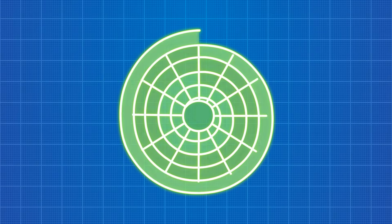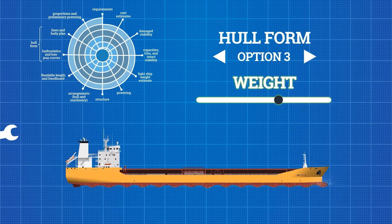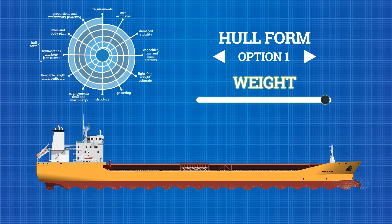Naval architects call it the ship design spiral. A cycle of decisions. You choose a hull form, test it, adjust the weight, tweak the propulsion, then circle back to the hull. Over and over again.